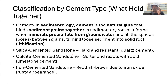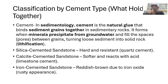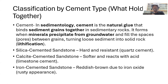Many people confuse cement with matrix. Matrix refers to fine materials deposited at the same time as the grains. Cement refers to minerals that come out of solution later on, fill the empty spaces, and bind the particles together to form a sedimentary rock. Different cement types include silica cementation, calcium carbonate cementation, and iron cementation.